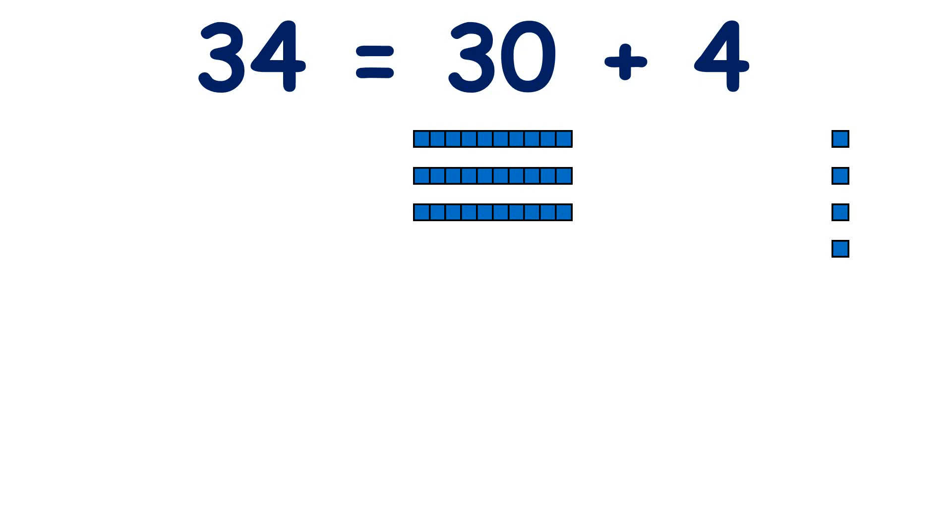So we're used to partitioning numbers into tens and units like this. With the number 34, we can partition it into three tens, or 30, and four units.